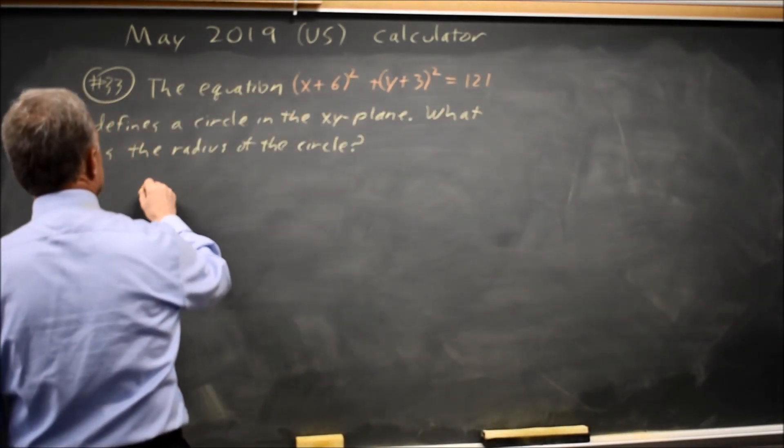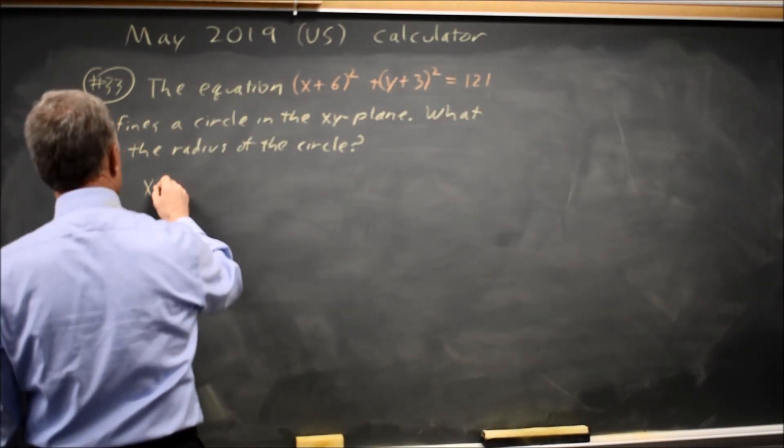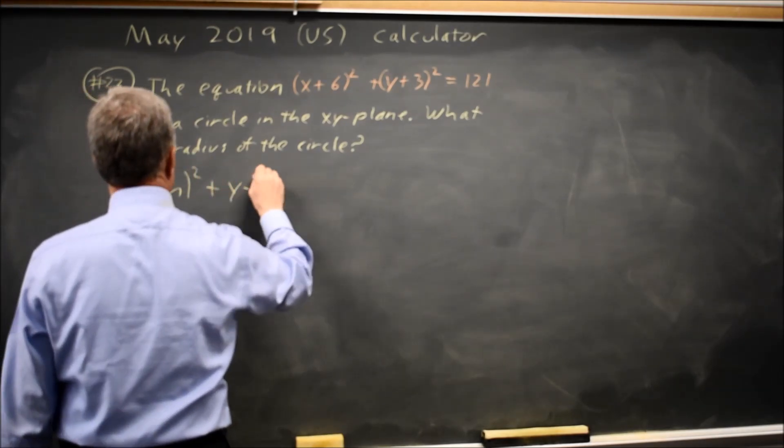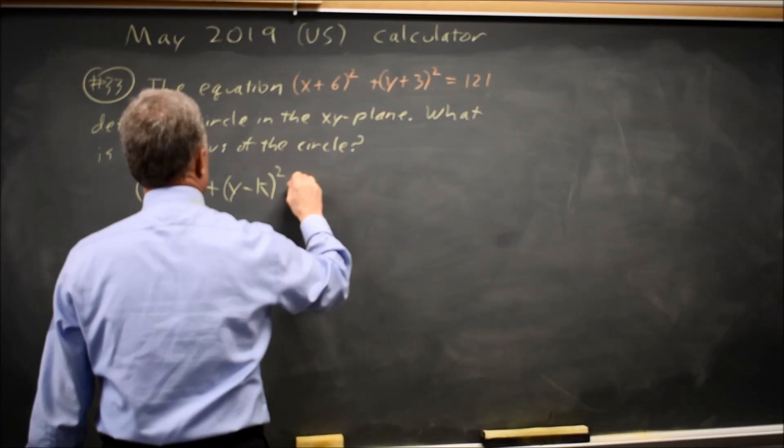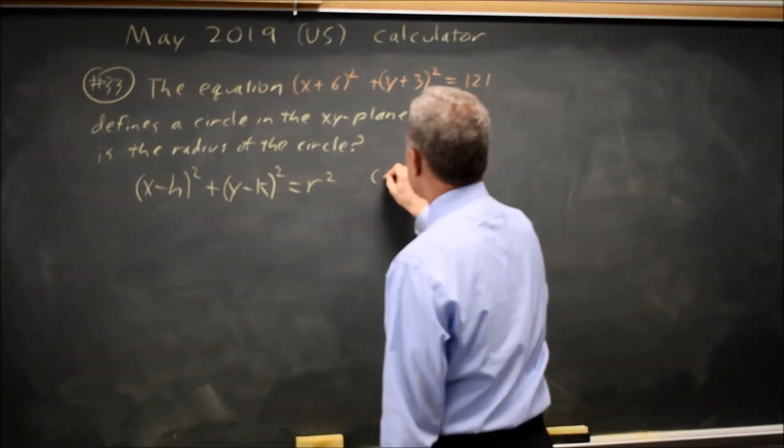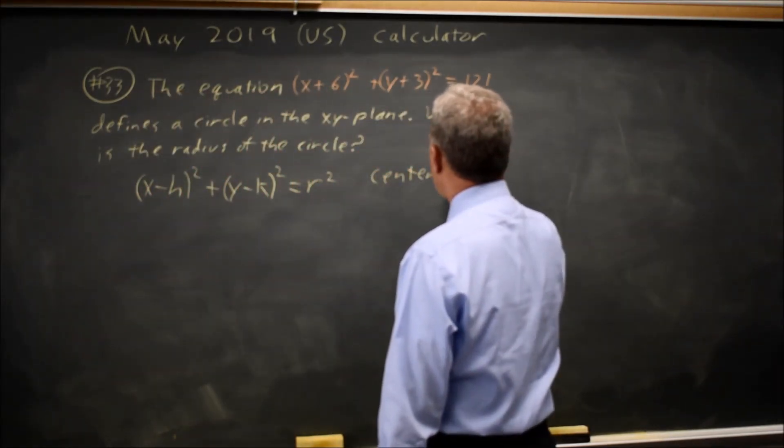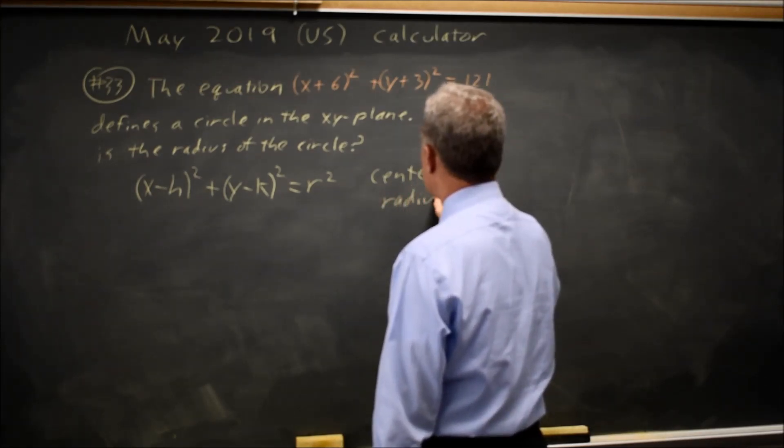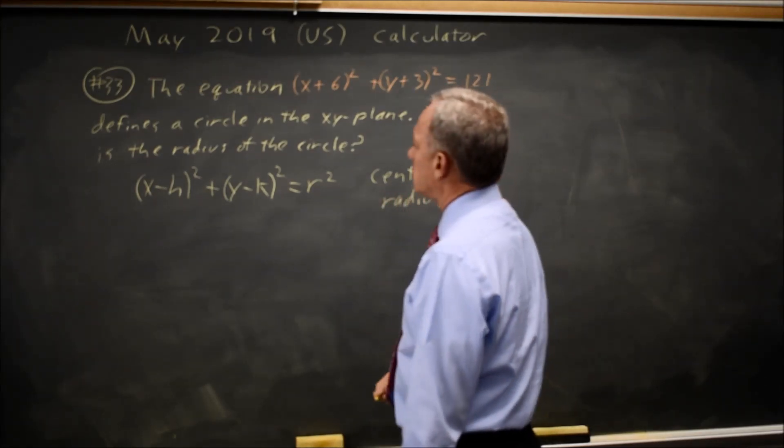I typically start by writing the general form of the equation for a circle. (x - h)² + (y - k)² = r² has center (h, k) and radius r. In this case,